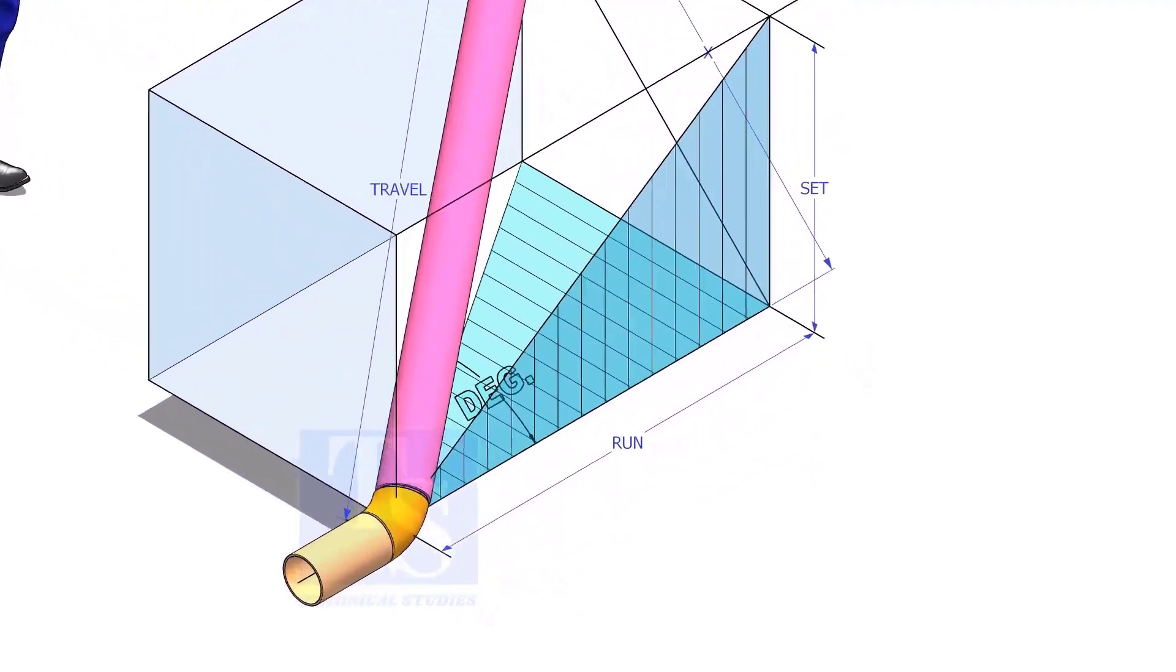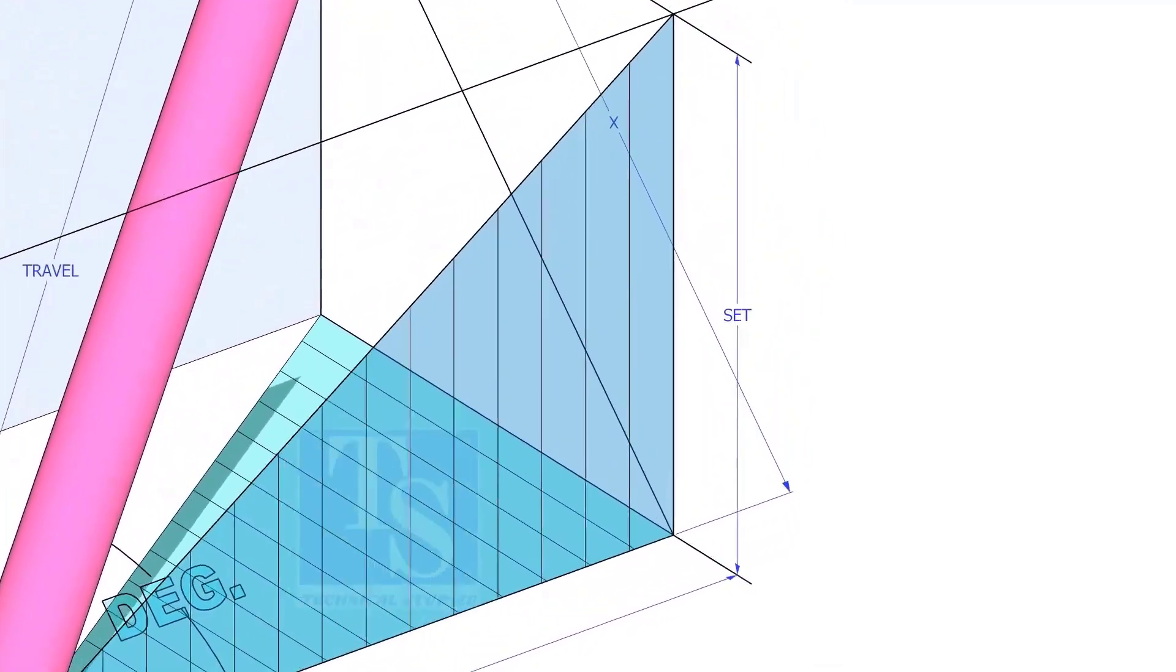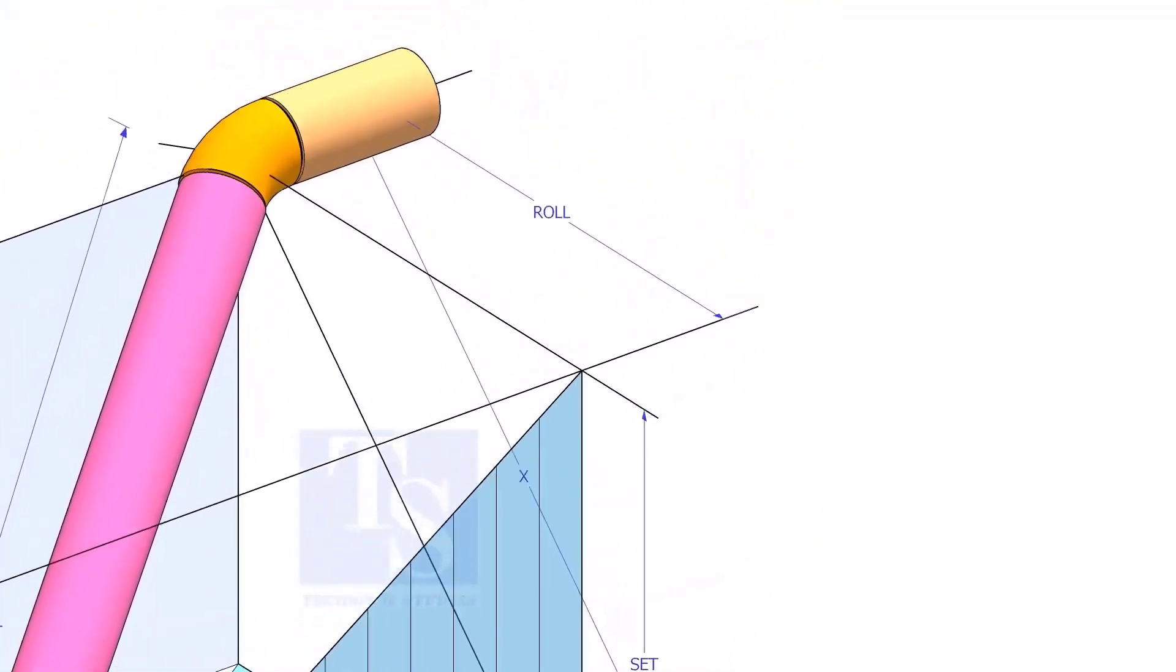In this video, I will show you how to calculate the travel length and the including angle of a double rolled offset pipe.